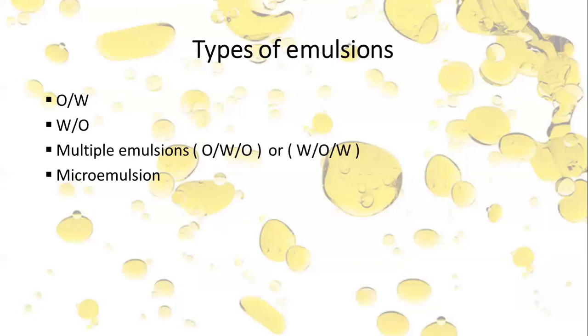Next is emulsions for rectal use. These are used in the form of enema for the evacuation of bowel. Starch mucilage is generally used in preparation of enema.